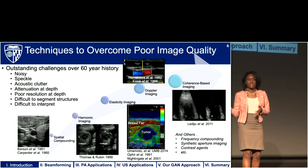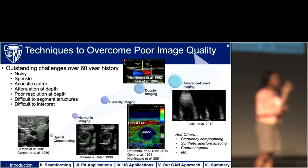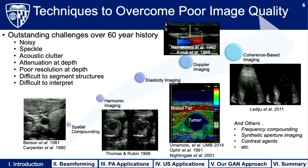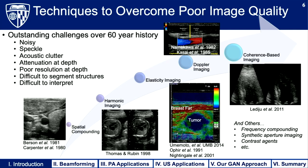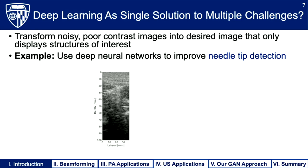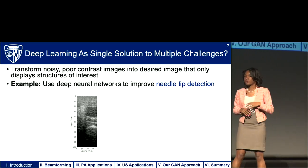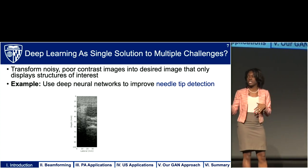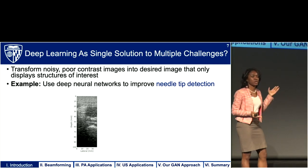Despite these techniques, none of them simultaneously address all challenges. This is what leads me to explore deep learning as a potential solution to simultaneously address this long list of challenges in one step. The question I'd like to answer is: how can we transform a noisy, poor-contrast image